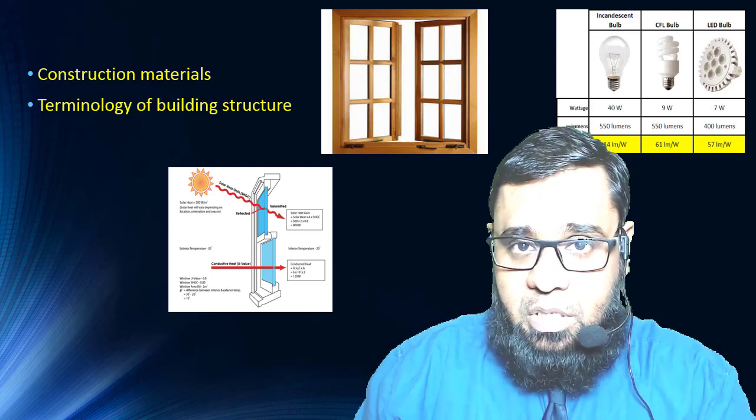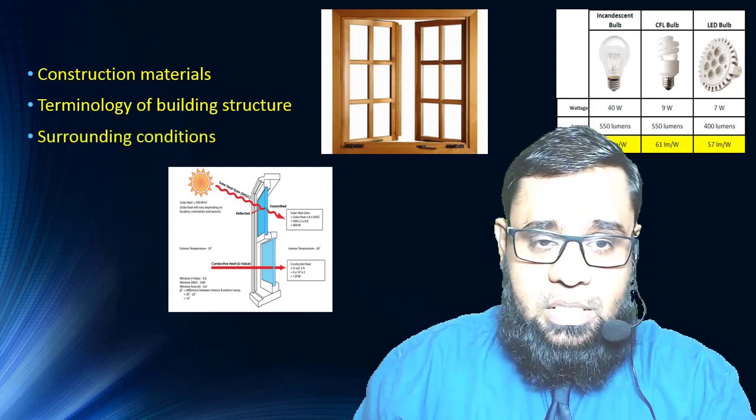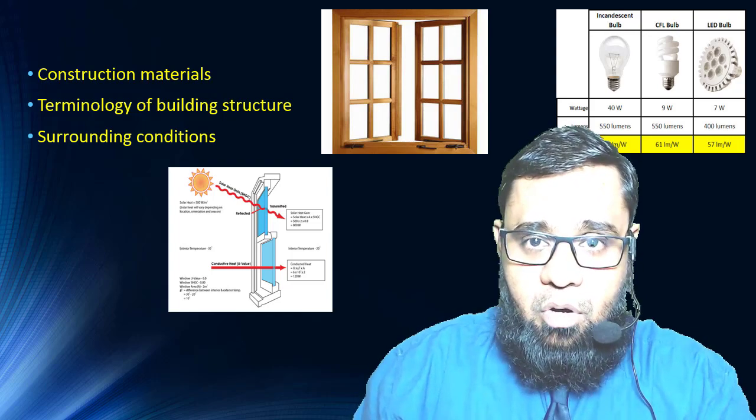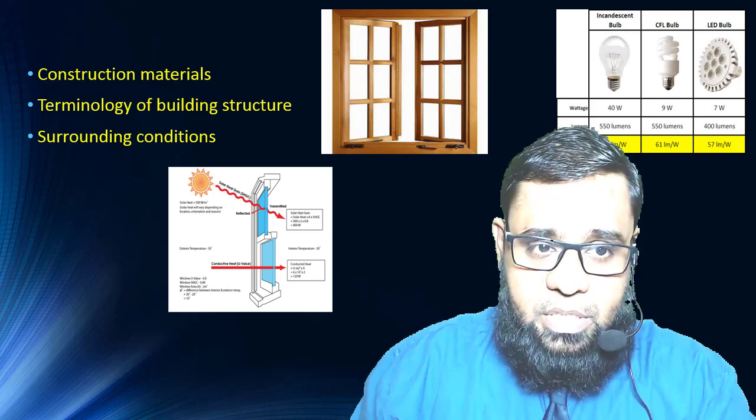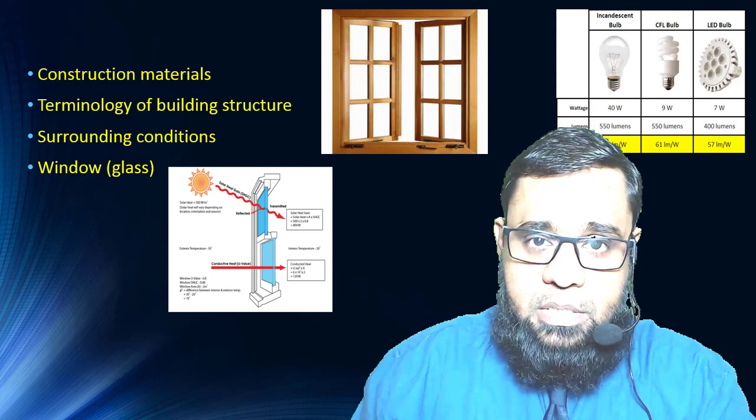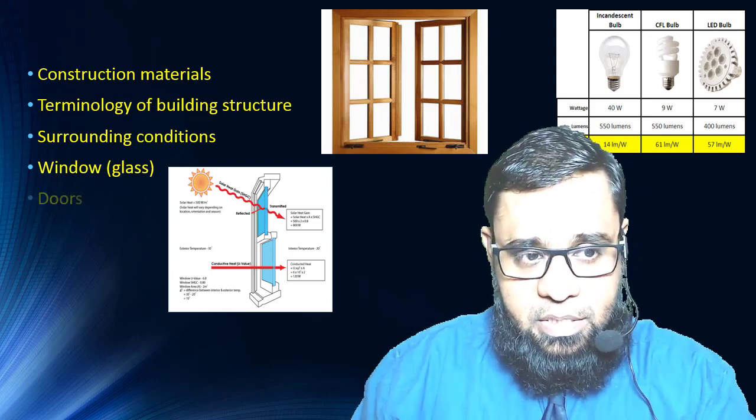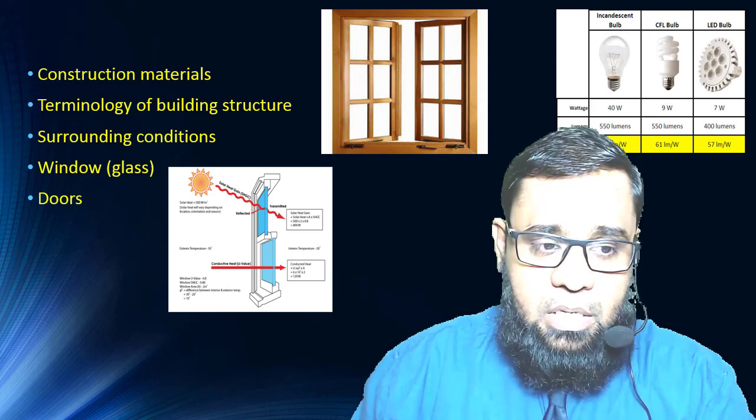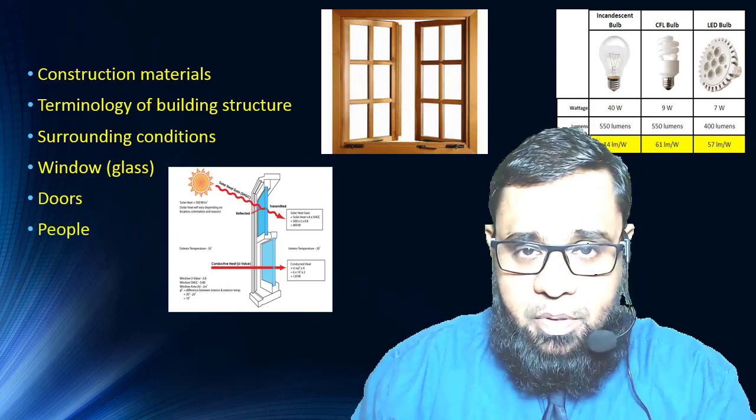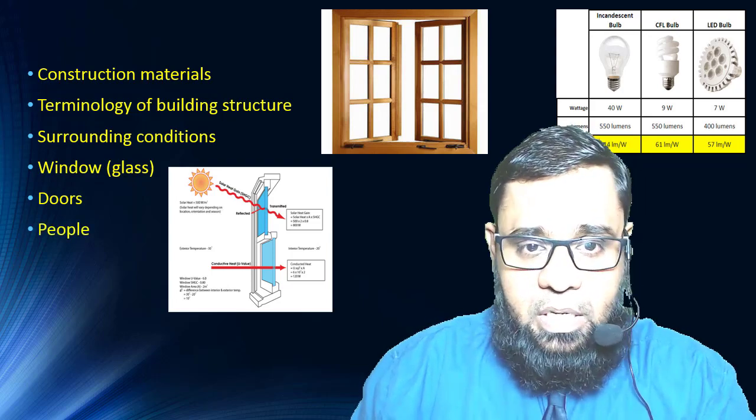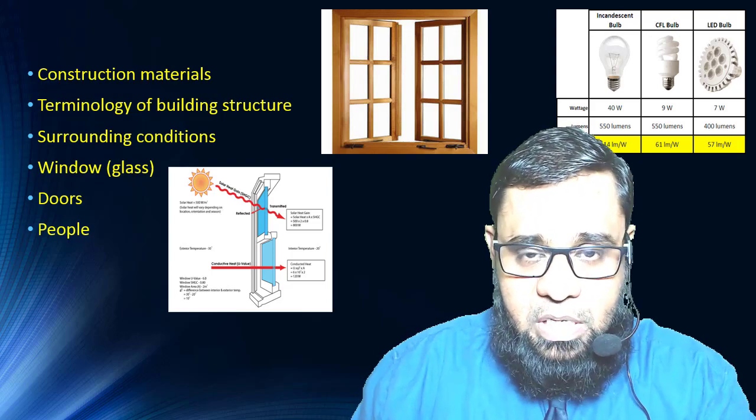Next, terminology of building structure like what is wall, what is wall partition, what is glass, what is glass partition, etc. Then the surrounding conditions like color of wall, color of the roof, etc. Then the window glass, the type of glass, the type of glazing, the color, etc.